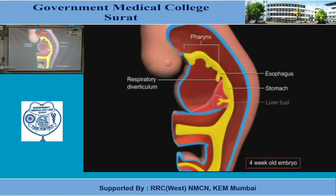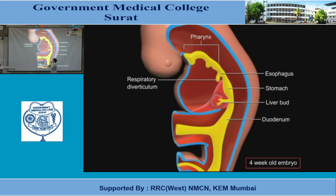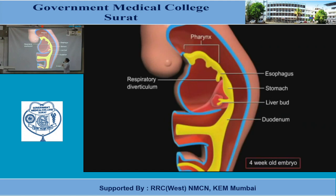Now, the development of the foregut. Again, in this you can see the sagittal section. This is the developing head. This is the pericardial region and developing heart. This whole yellow structure — the whole yellow you can see — is the gut. This is the part of the midgut through which the duct is communicating with the yolk sac. Just anterior to this is the foregut; just posterior to this is the hindgut.